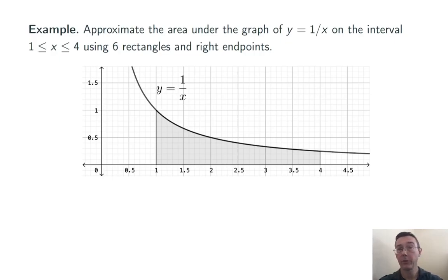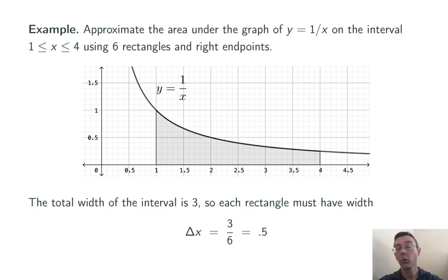Let's do an example from start to finish. Approximate the area under the graph of y equals 1 over x on the interval 1 less than or equal to x less than or equal to 4, using 6 rectangles and right-hand endpoints. So here's a graph showing the region whose area we're trying to approximate. The total width is going to be 3, 4 minus 1, and we have n equals 6 rectangles, so delta x, the width of each rectangle, is going to be 1 half.